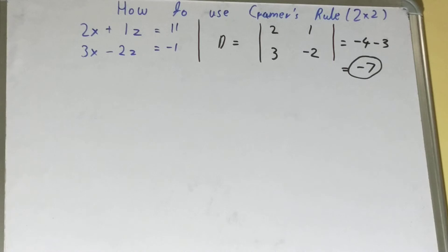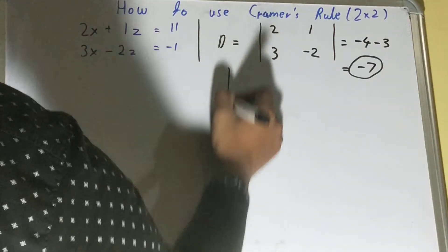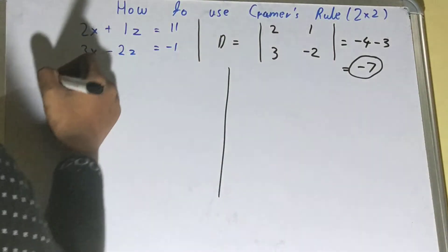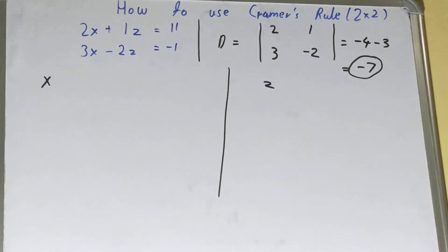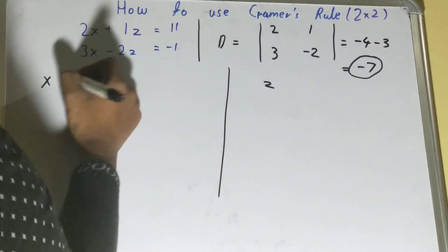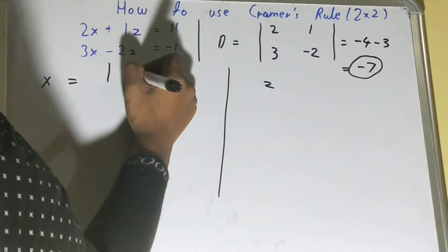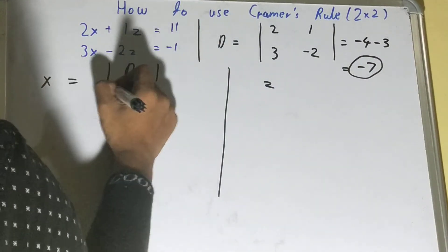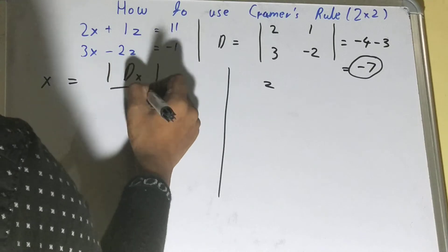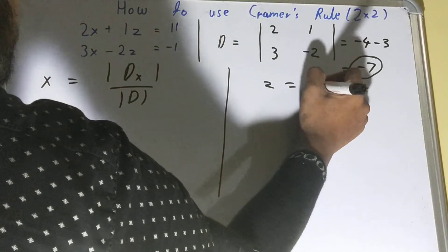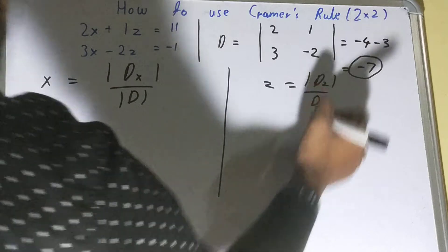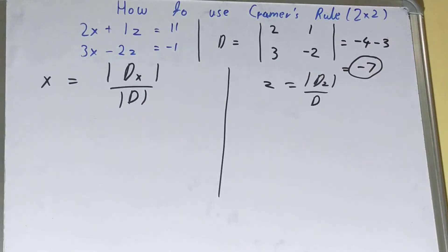Now we need to find the values of x and z. For finding x, the formula is dx over d, and for finding z it is dz over d. You'll come to know what dx and dz are — you don't need to worry.